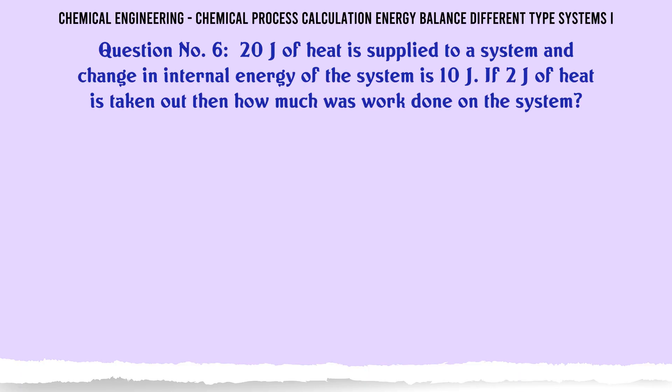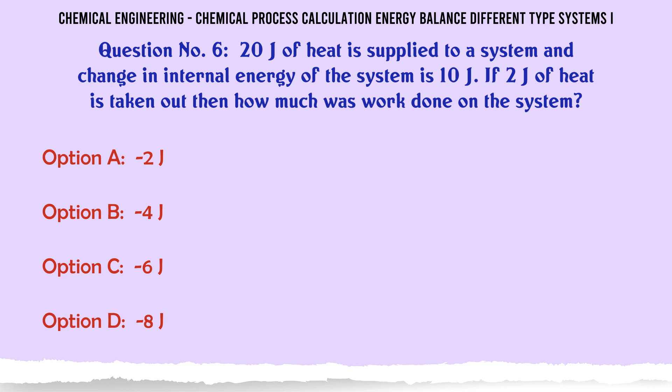20J of heat is supplied to a system and the change in internal energy of the system is 10J. If 2J of heat is taken out, then how much work was done on the system?